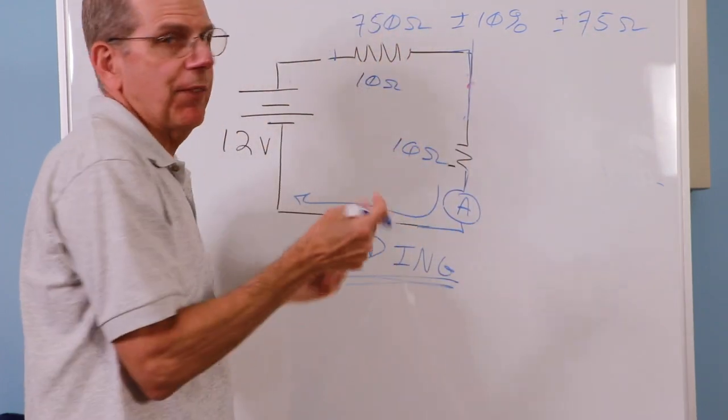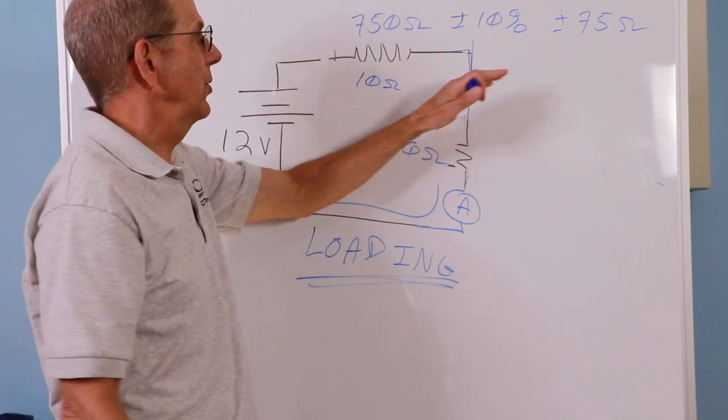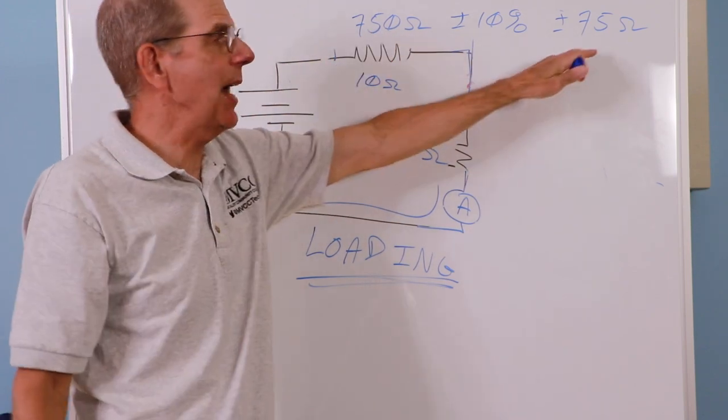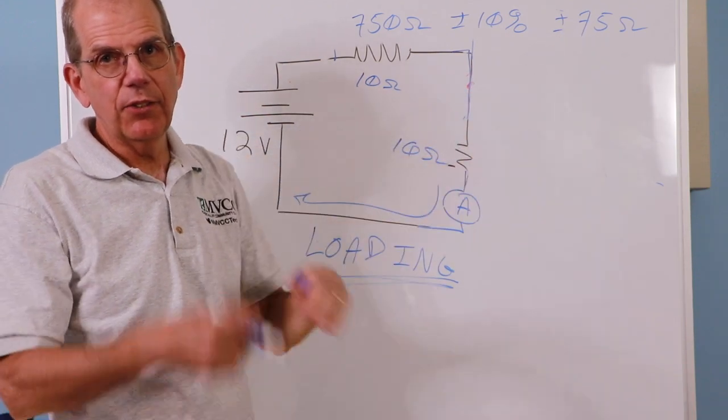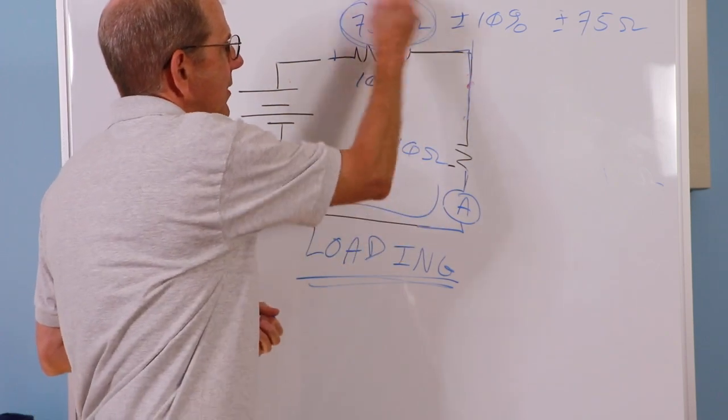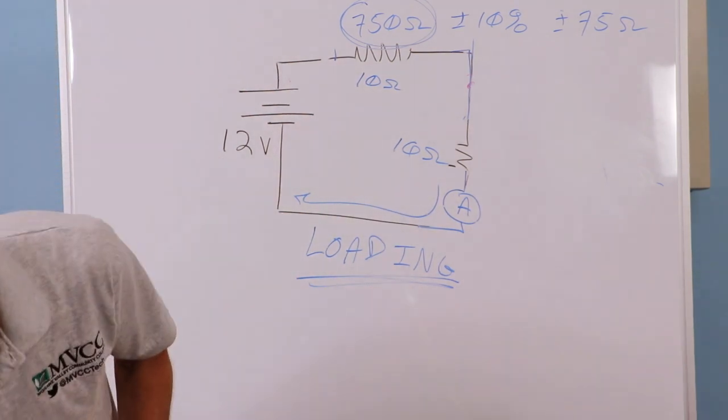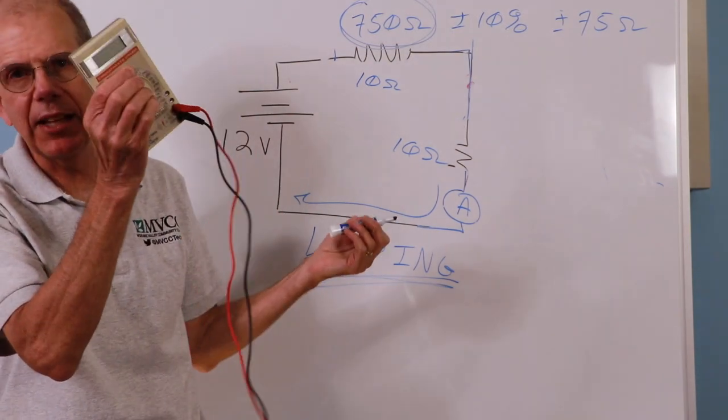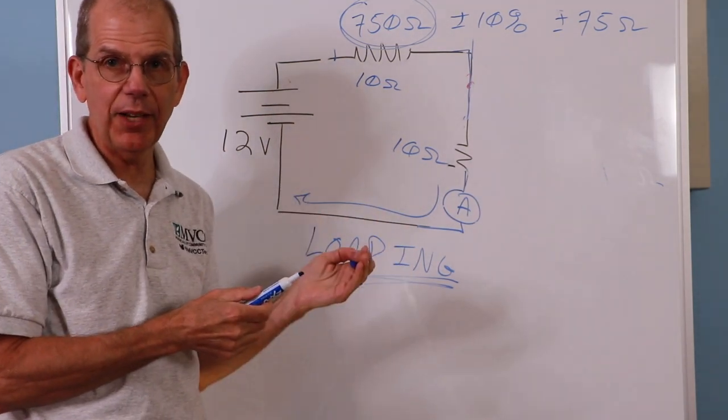So you're saying if it's within spec, it can be as big as 750 plus 75. In other words, 825. On the small end, it could be as small as 750 minus 75 or 675. So when you go in to do your measurements, you're not going to use this in your theoretical calculation. Why do that if you have a meter that can measure that resistance to within 1%, let's say, I'll use that for my theoretical calculation.